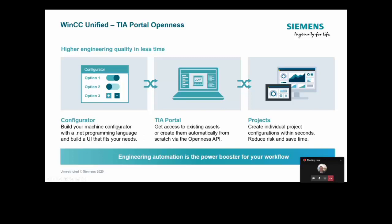If you've not looked at the Openness API, you need to speak to Siemens and come and have a look at this. It's a hugely powerful option we have for TIA Portal. And the best thing is it's completely free — completely free and completely open and published. So you can download the Openness manual today and start looking at how you can use that.